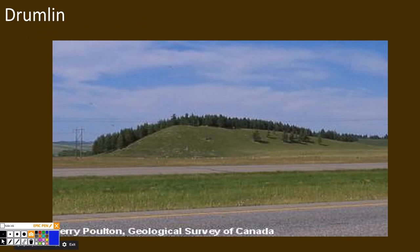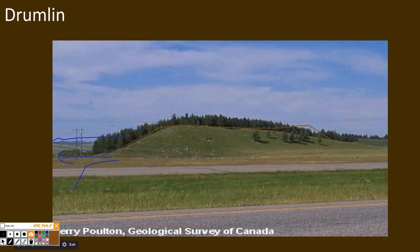A drumlin is a pile of rock created after a glacier moved through the area. Here a glacier is moving through towards the left. Eventually that glacier will pass, leaving behind a pile of eroded rock that's been broken down by glacial weathering and erosion. The higher end of the drumlin points in the direction the glacier was moving.